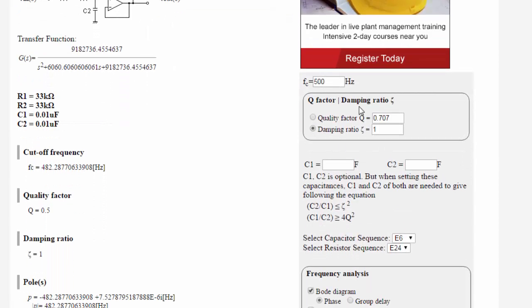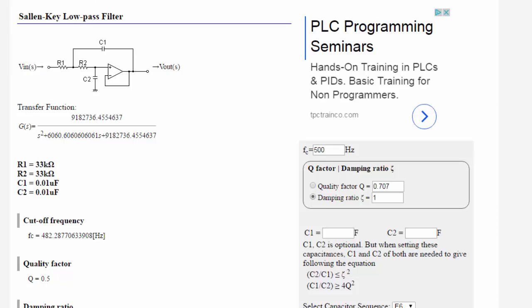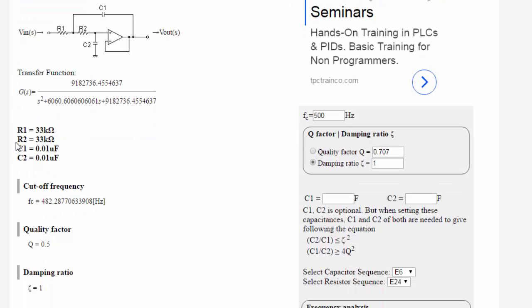I would just leave these default. Q factor is the quality factor of the filter and has to do with how fast it attenuates or the roll off. I type in the 500 and hit calculate. It calculates these values R1, R2, C1, C2 so we don't have to use this transfer function or do the math ourselves.